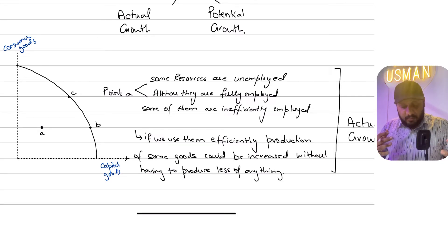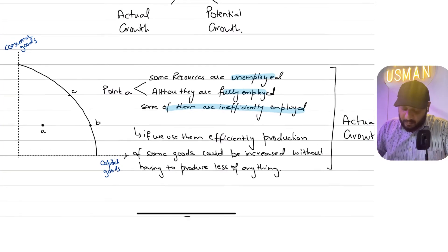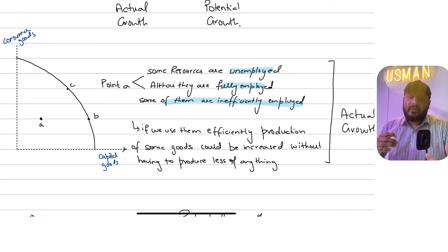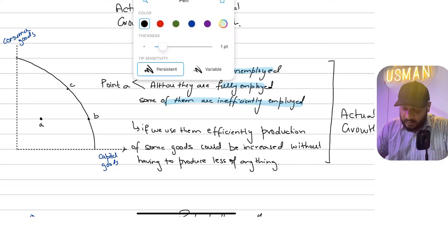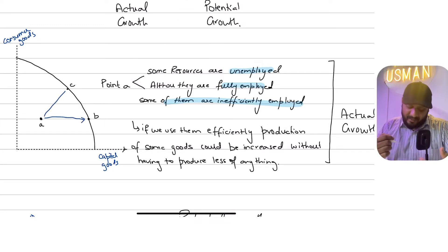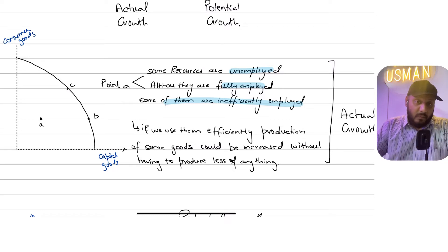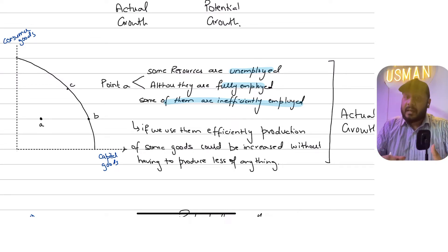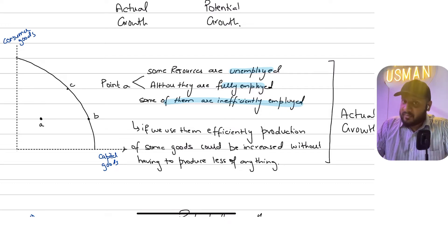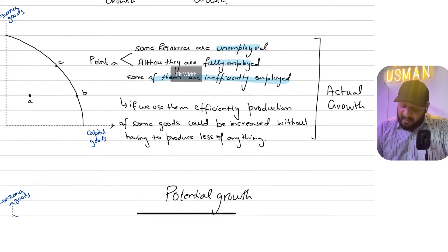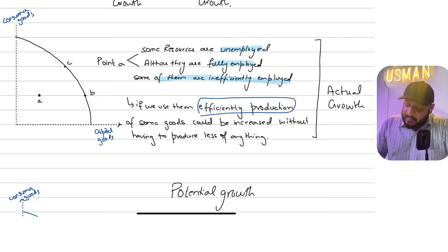So at point A, some resources are unemployed, or some resources whether fully employed are inefficiently employed. If there's actual growth in the economy, you will move from point A to C or from point A to B. Moving from A to C increases output of both consumer and capital goods. Moving from A to B increases only capital goods output without foregoing consumer goods output. In both cases, you are fully efficient and fully employed.